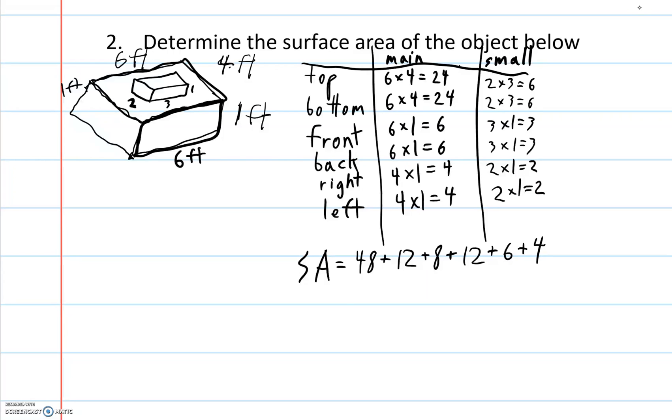Now, going through and adding them all up, I'm going to have 48 plus 4. Let's do that one first. Oh no, let's do 48 plus 12 is 60. 8 plus 12 is 20. And 6 plus 4 is 10. Adding those up, we have 60 plus 20 plus 10 equals 90.